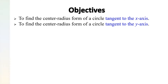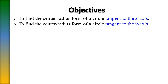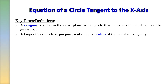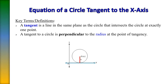In this section, we're going to find the center-radius form of a circle tangent to the x-axis, and also tangent to the y-axis. A tangent line is a line in the same plane as the circle that intersects the circle at exactly one point. A tangent to a circle is perpendicular to the radius at the point of tangency.